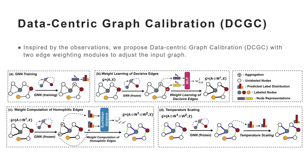Inspired by the observations, we propose Data-Centric Graph Calibration, DCGC, with two edge-weighting models to adjust the graph. For learning of decisive edges, we parameterize the adjacency matrix and enable the prediction loss to backpropagate to edge weights. In this way, the edge weights can automatically fit the needs of label prediction, so that critical edges will be emphasized. For the computation of homophilic edges, we quantify the homophily of each edge by predicting label distributions and adaptively assigning larger weights to edges with stronger homophily.